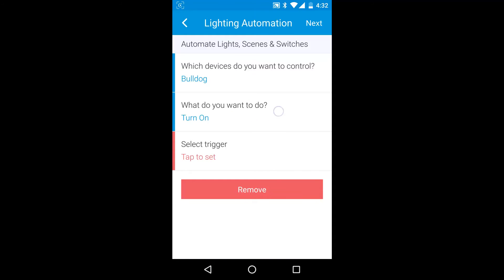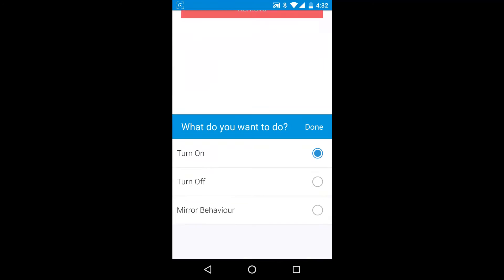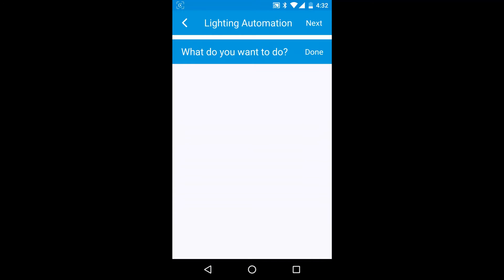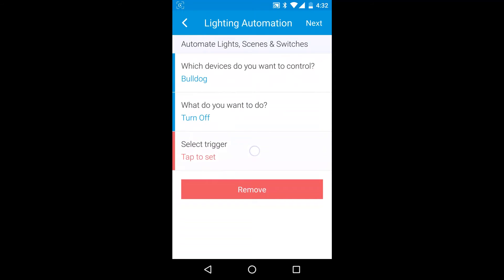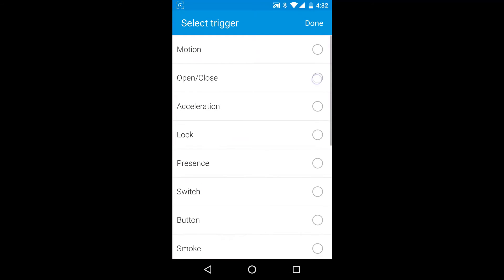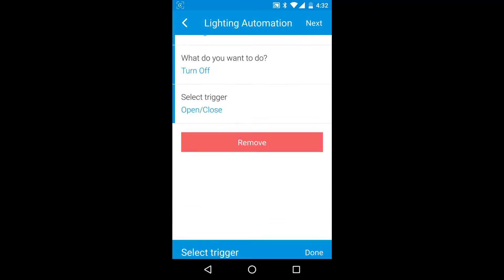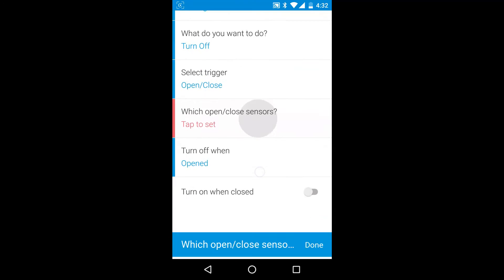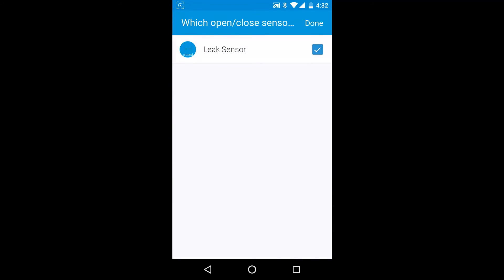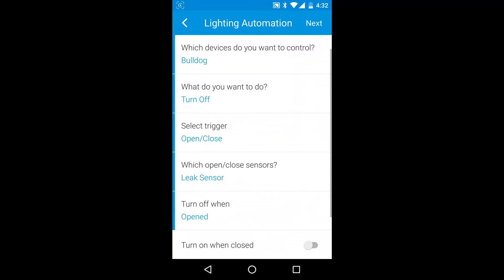Tap where it says What do you want to do and select Turn Off before tapping Done. Tap Select Trigger and then Open Close from the next menu. Tap which open close sensors and then Leak Sensor. Now save the automation routine.